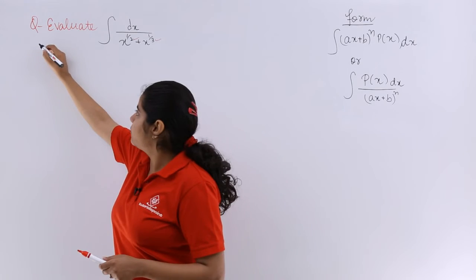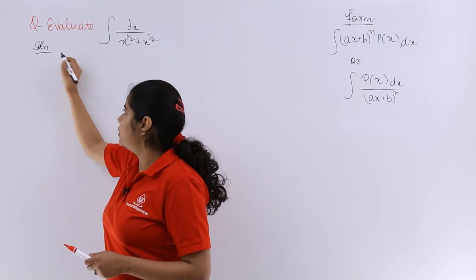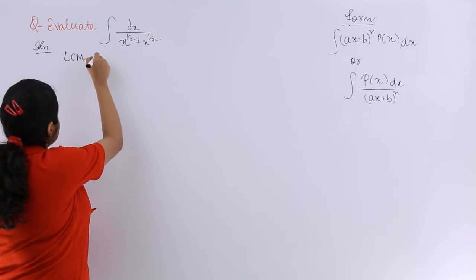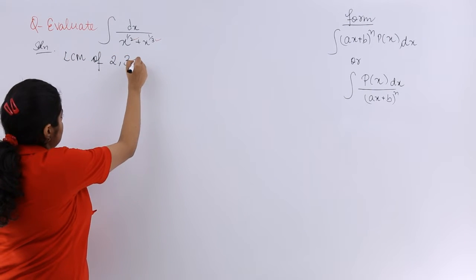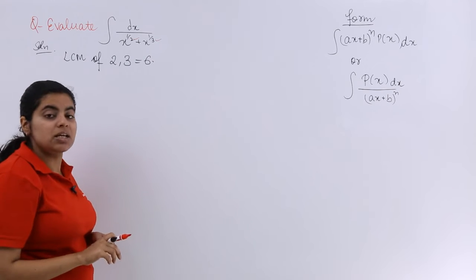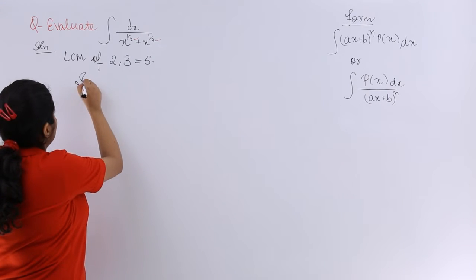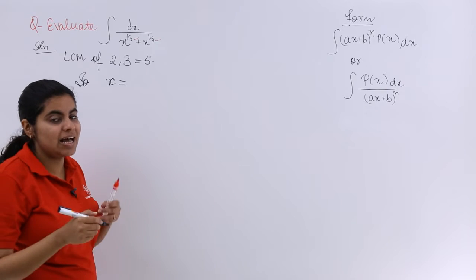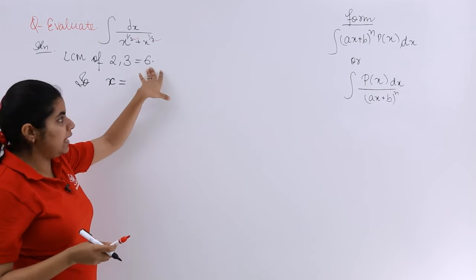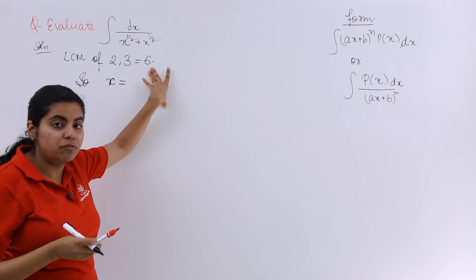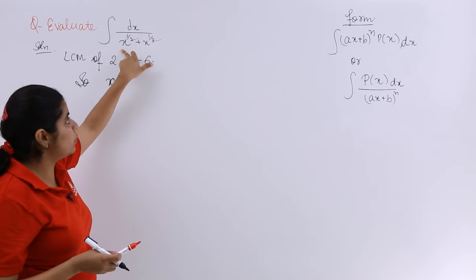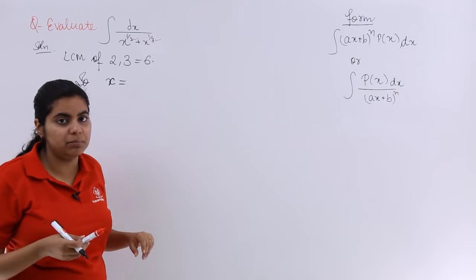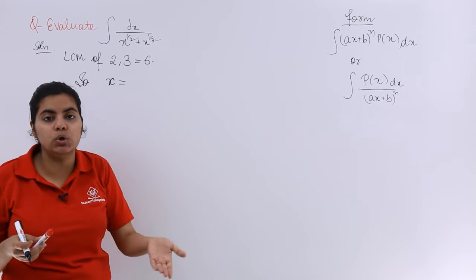So I write solution and let's understand how to do this kind of a question. I will write LCM of 2 and 3 is equal to 6. So what I have to do? So my substitution will be such that my x has to be taken with the help of this LCM. Why? Because if I substitute x as t, so it will become t raise to the power 1/2, t raise to the power 1/3. But again, the fraction would not go.